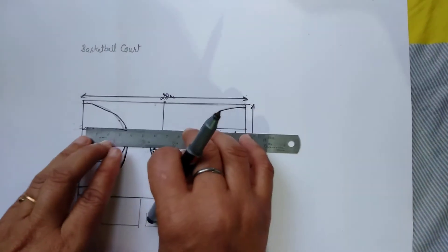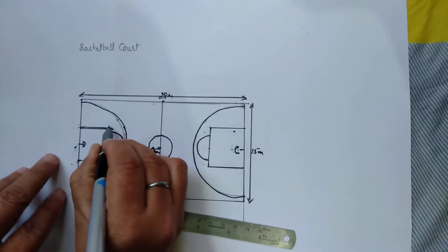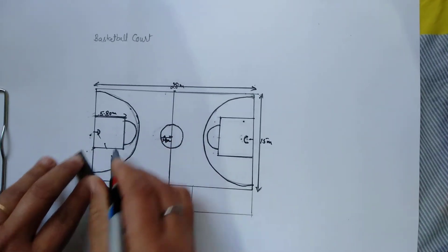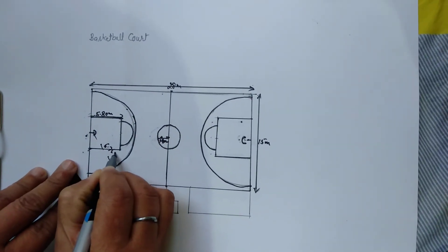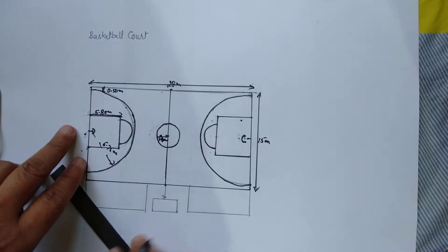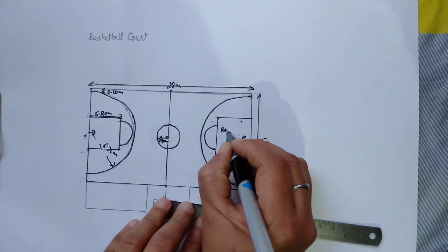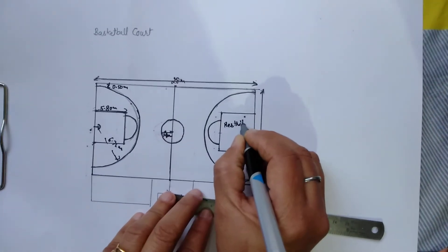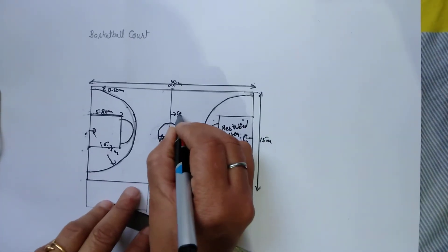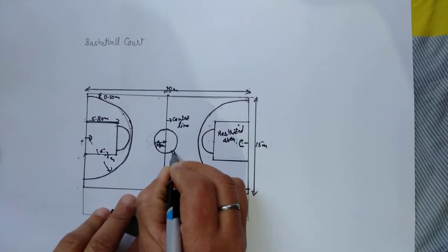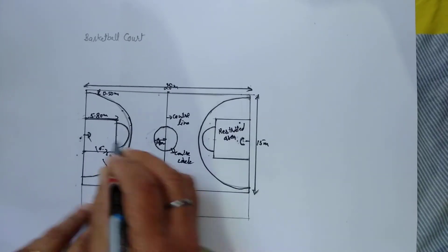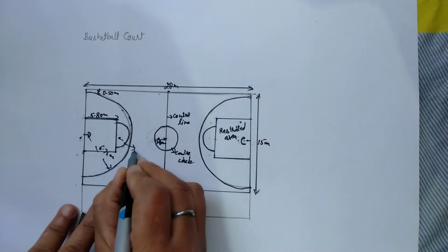Center, the other side. This is restricted area. This is center line. This is center circle. This is free-throw point. According to scale, 1 centimeter equals 2 meters.